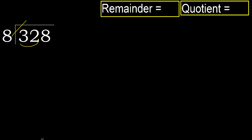but not greater. 8 multiplied by 5 is 40 — it's greater. Multiplied by 4 is 32 — it's not greater. Subtract 32 minus 32 equals 0.